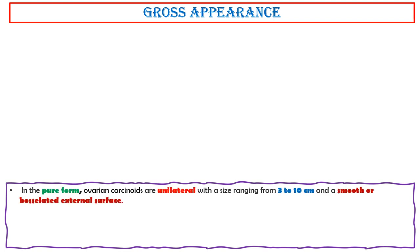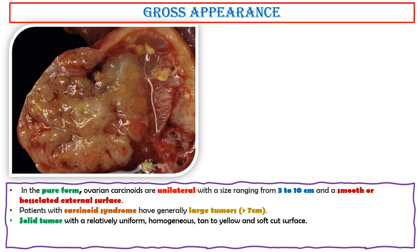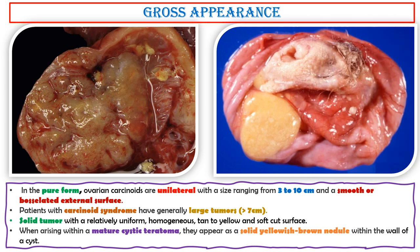In the pure form, ovarian carcinoids are unilateral with a size ranging from 3 to 10 cm, and a smooth or lobulated external surface. Patients with carcinoid syndrome generally have large tumors more than 7 cm. This photo shows a solid tumor with a relatively uniform, homogeneous tan to yellow and soft cut surface. When arising within a mature cystic teratoma, they appear as a solid yellowish-brown nodule within the wall of a cyst.